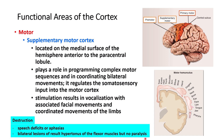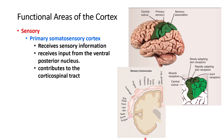The primary sensory cortex is located just posterior to the central sulcus. If you look at it closely, it receives different types of sensory stimuli — some coming from muscle spindles, some from joints and tendons, and some from the skin — with different areas responsible for each.